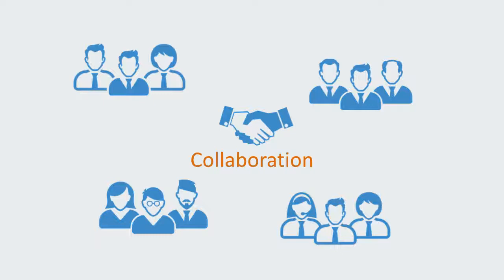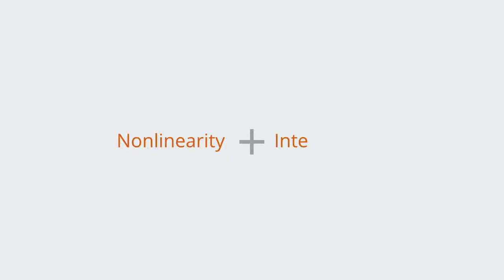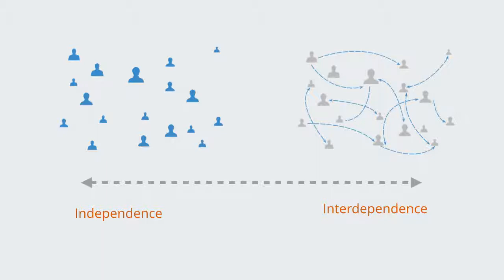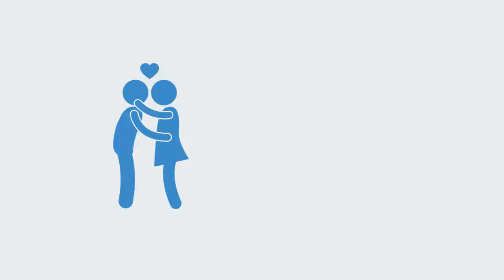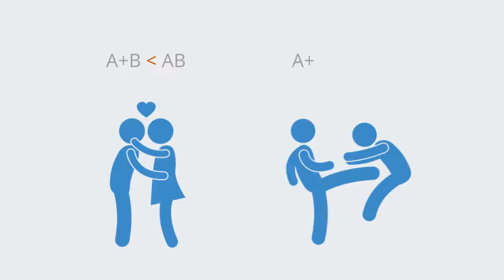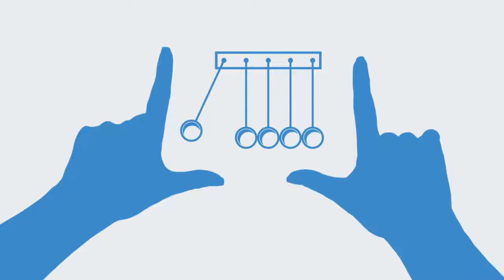Next, we'll talk about non-linearity and interdependency, which are key concepts within systems and complexity theory. As we turn up the connectivity, the parts of the organization become more interdependent — something we're currently witnessing around the world with the rise of IT and globalization. Interdependence creates non-linearity: when we put two or more things together and they become interdependent, they can work together constructively or inversely counteract each other, creating a combined organization that is more or less than the sum of its parts. One and one stops adding up to two, and linear thinking starts to break down.